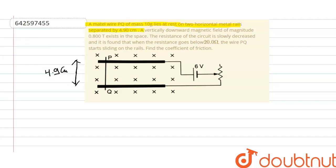And what else is given to us is the mass of this metallic wire. So mass of this wire is given to us as 10 grams.